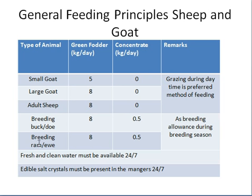For a breeding ram or buck, we give 8 kilograms of green fodder and half a kilogram of concentrate. Fresh and clean water must be available 24/7, and edible salt crystals must be present so animals can lick them and remove any deficiency of sodium chloride.